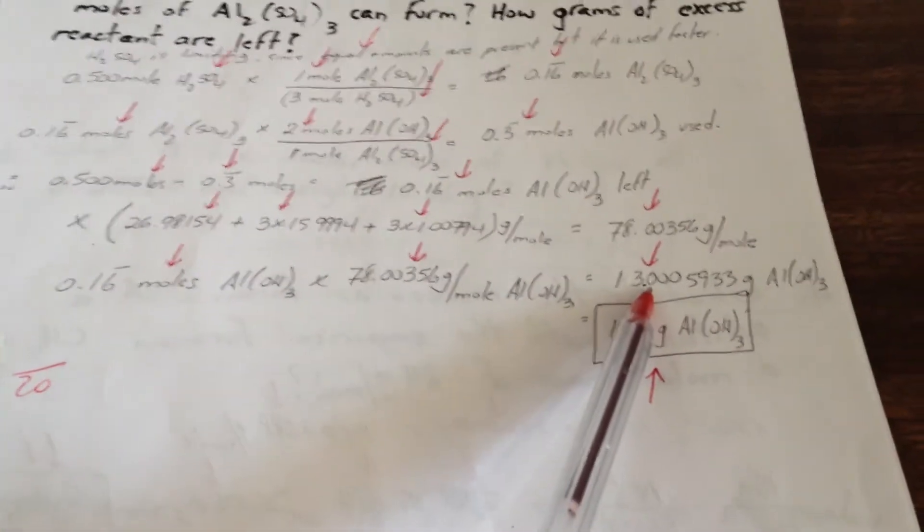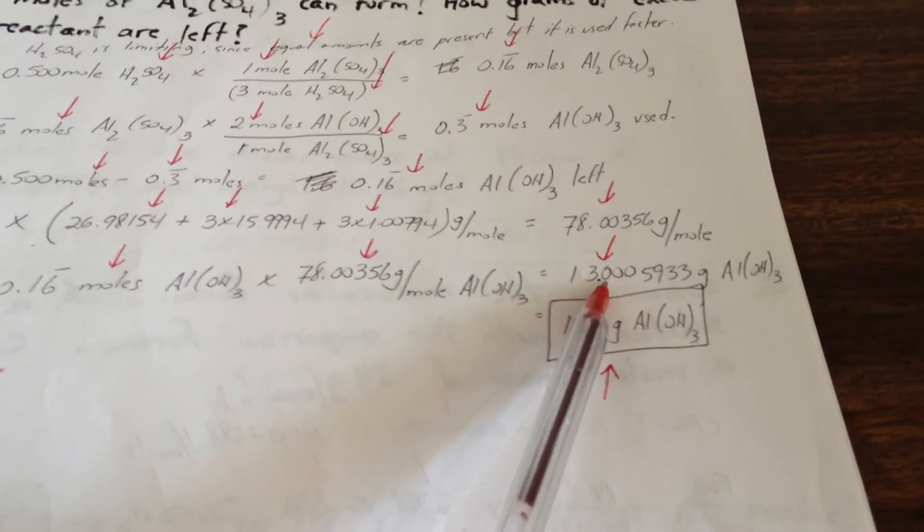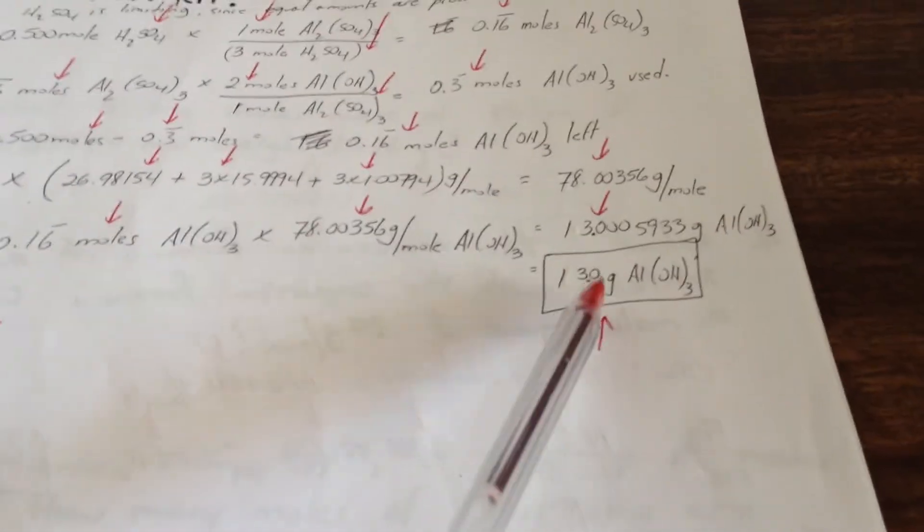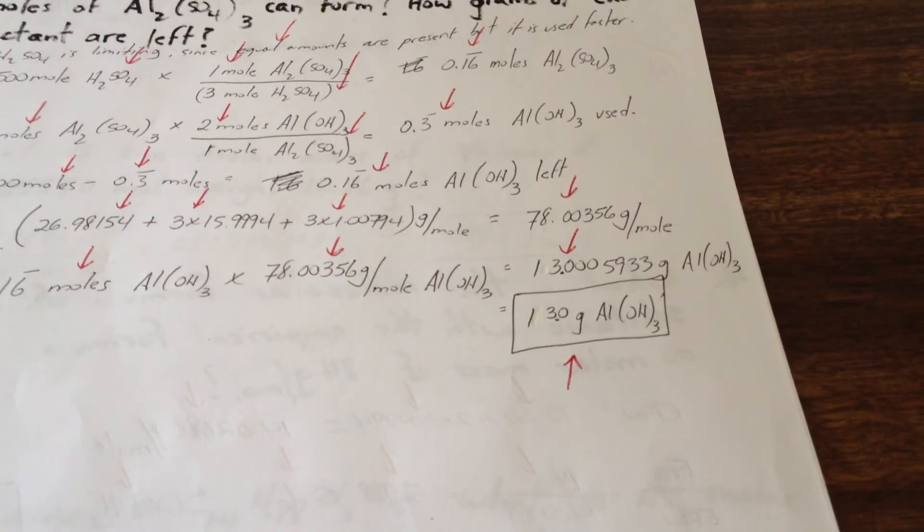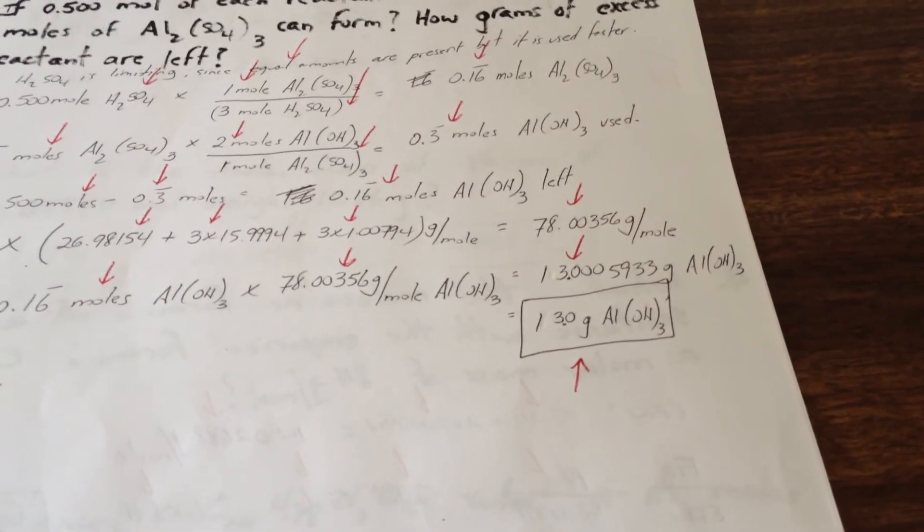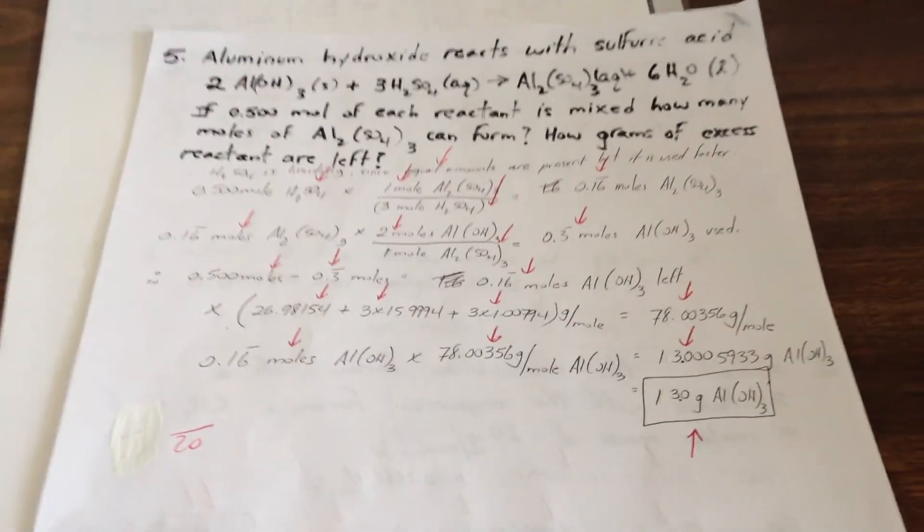you get 13 grams of aluminum hydroxide left over. So the excess reagent will still have 13.0 grams of aluminum hydroxide left over. This question is worth 20 marks. Each one of the red arrows represents what I'm looking for for each part of that question.